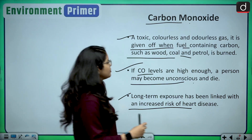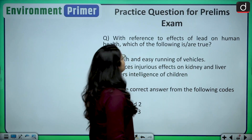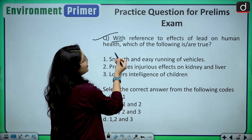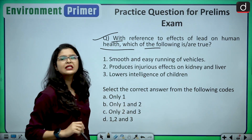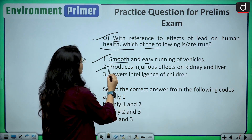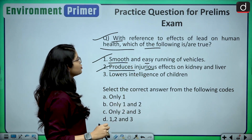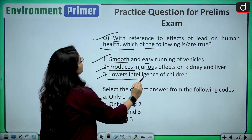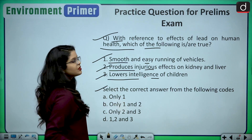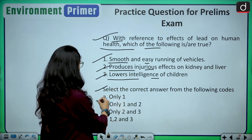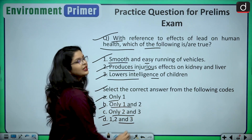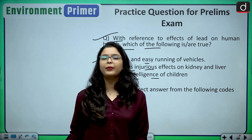Now let us see a practice question for your prelims examination. With reference to the effects of lead on human health, which of the following statements are true? Statement 1: smooth and easy running of vehicles. Statement 2: produces injurious effects on kidney and liver. Statement 3: lowers the intelligence of children. Options are A: only 1, B: only 1 and 2, C: only 2 and 3, D: 1, 2 and 3. Kindly drop your answers in the comment box below.